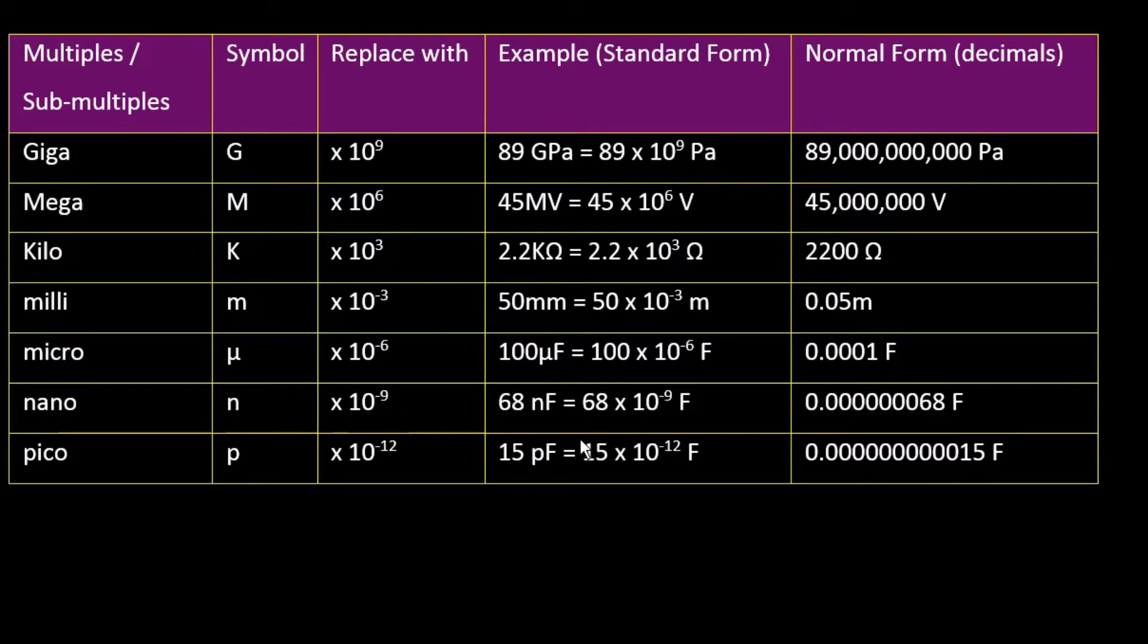Now when you get to the sub-multiples, which is the negative powers, you move the decimal point the other way. So in the multiples, you've moved the decimal point 9 places to the right, 6 places to the right because 10 to power 6, 3 places to the right. But when you come to the sub-multiples, the decimal point goes the other way.